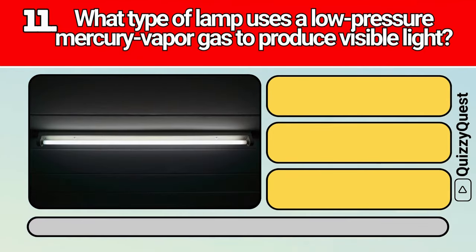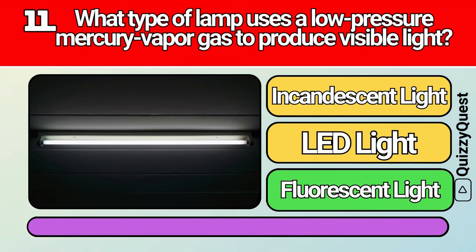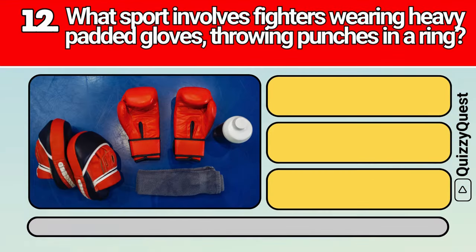What type of lamp uses a low-pressure mercury vapor gas to produce visible light? What sport involves fighters wearing heavy padded gloves, throwing punches in a ring?